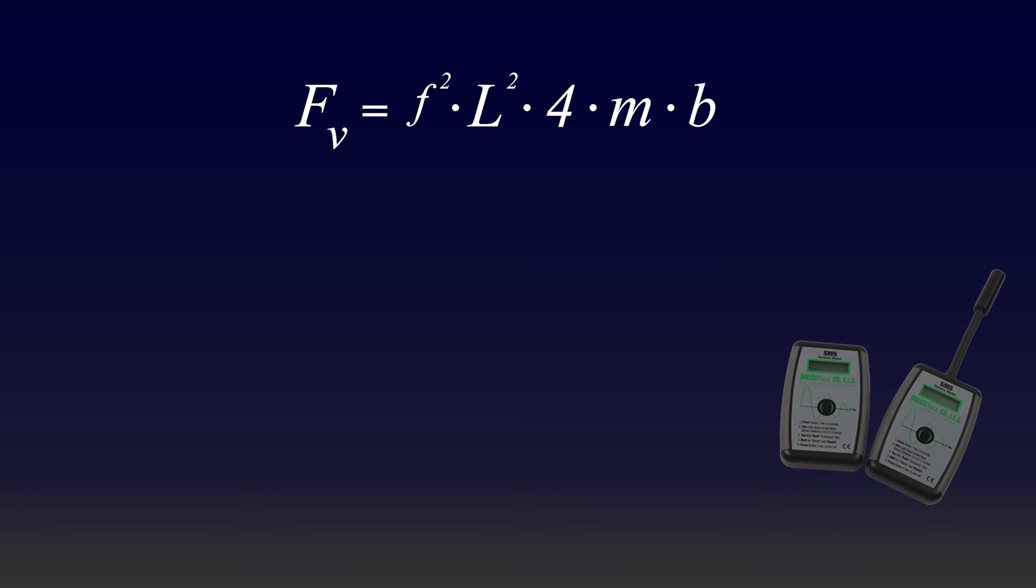We will take the frequency of the belt to be 47 Hertz, the length of the belt to be 500 millimeters or 0.5 meters. We will take the AT10 belt to have a belt mass of 0.058 kilograms per meter of belt length per centimeter of belt width. And we will take b to be 5 centimeters.